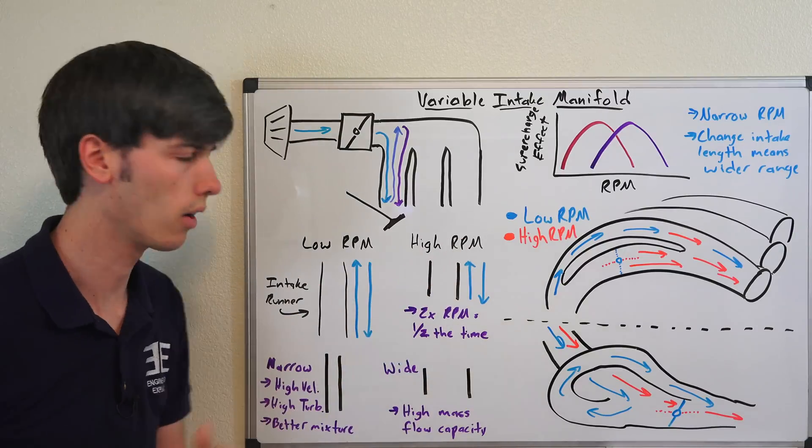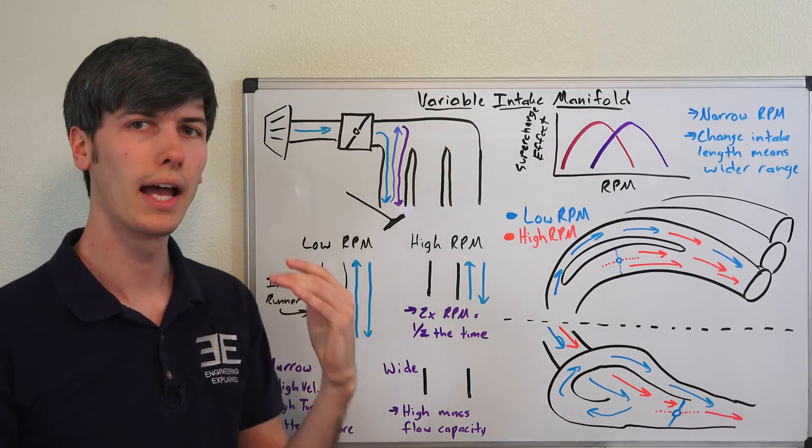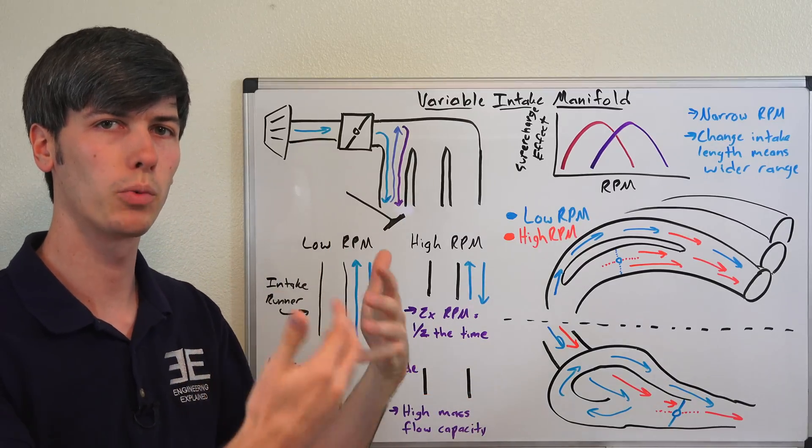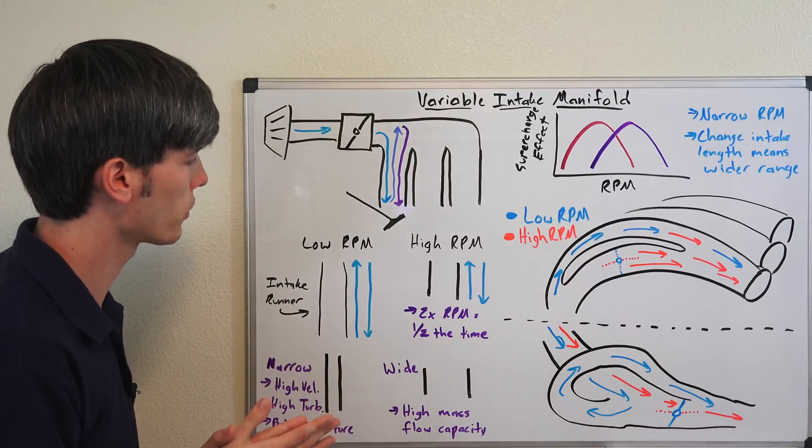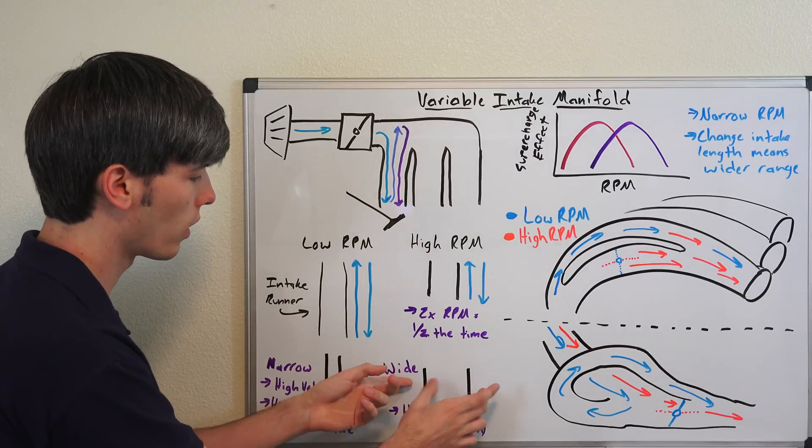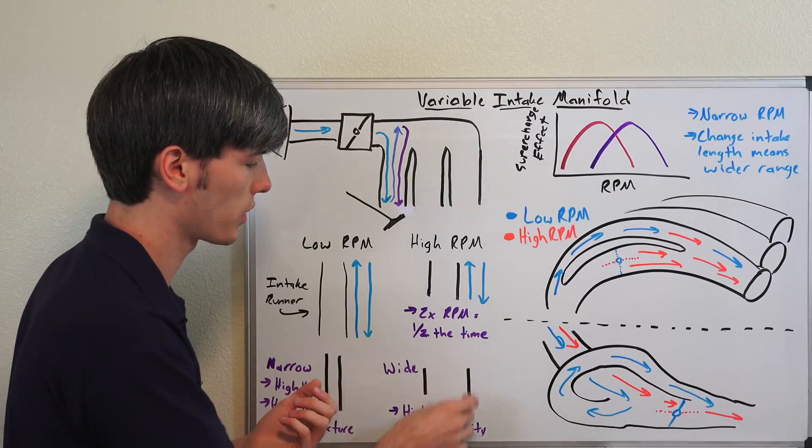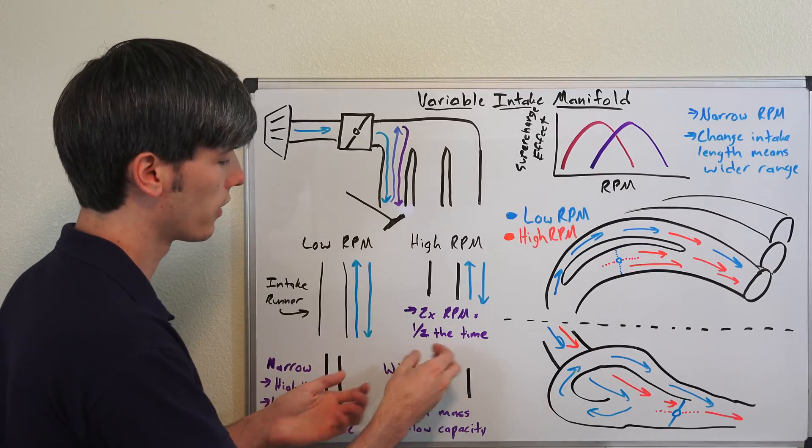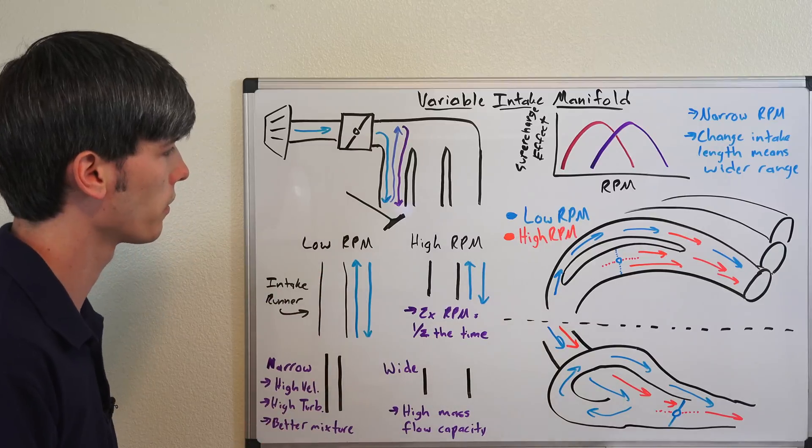Now narrow is also better for lower RPM because it means you're going to have air moving at a higher velocity. Moving at a higher velocity it'll become more turbulent, mix with the fuel better, better fuel mixture and you'll have a better combustion. With wider however at higher RPM, you're going to want it to be wider and that's just because of flow. You don't want it to restrict how much air can pass through. Wider means higher mass flow capacity and so you don't restrict it at higher engine RPMs and you can create more power with more flow.